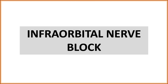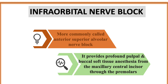The infraorbital nerve block is more commonly called the anterior superior alveolar nerve block or ASA. It provides profound pulpal and buccal soft tissue anesthesia from the maxillary central incisors through the premolars. The buccal soft tissue between the maxillary central incisor and the premolar is anesthetized by this block — not the palatal soft tissue. For the palatal area, we give a palatine block.